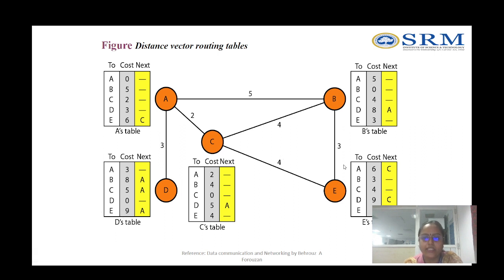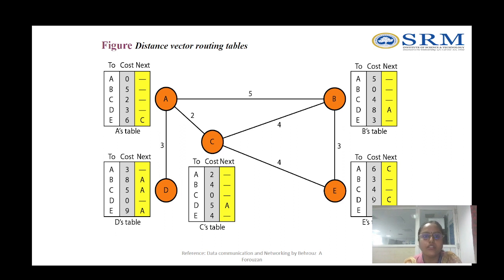For node E's routing table: E can reach C directly at cost 4 and B directly at cost 3. E cannot reach A directly, so it goes through next hop C: E to C to A costs 4 plus 2 equals 6. To reach D, E goes through C then A then D: 4 plus 2 plus 3 equals 9, next hop C. This figure represents the routing table of every node, showing the destination, cost, and next hop.